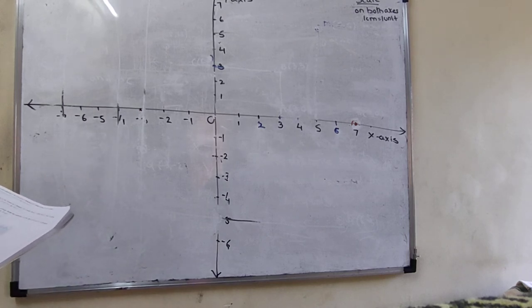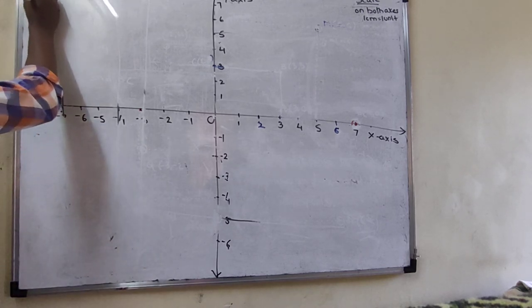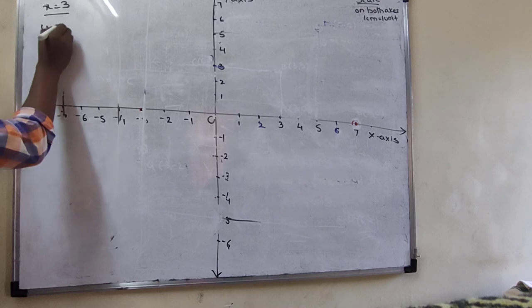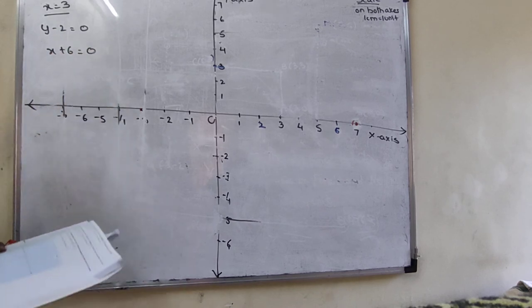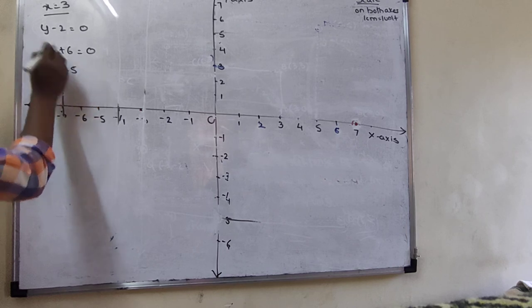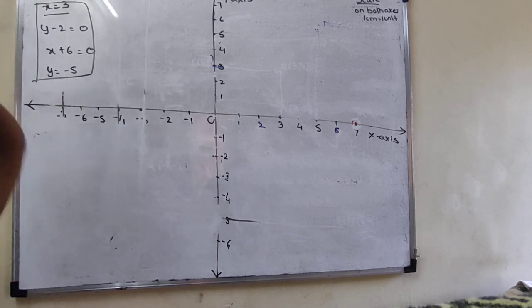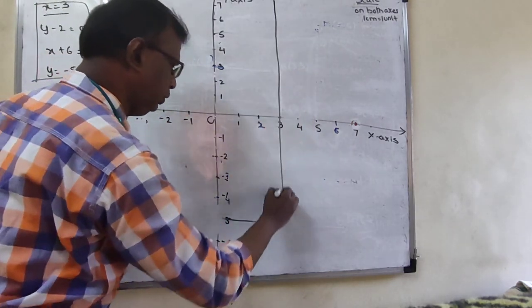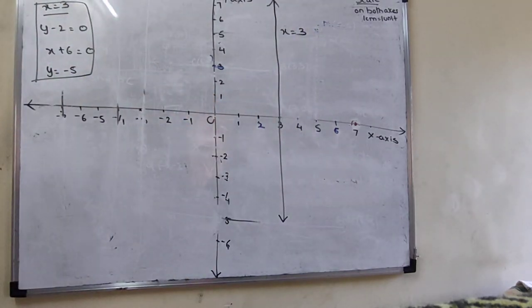Question 6: Classify which of the following equations have graphs parallel to the x-axis and which are parallel to the y-axis. The four equations are: (1) x = 3, (2) y - 2 = 0, (3) x + 6 = 0, (4) y = -5. We draw each line. x = 3 is a vertical line. Now solve equation 2: y - 2 = 0 gives y = 2, which is a horizontal line.